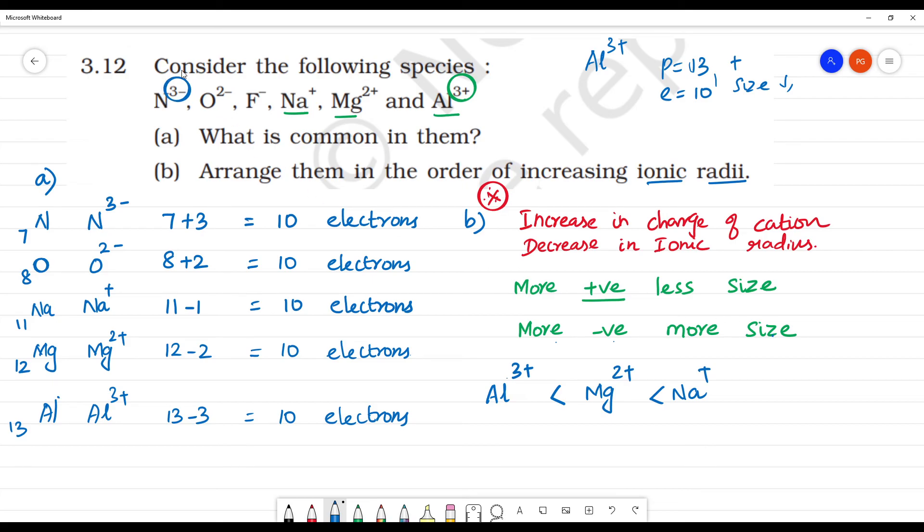The biggest size is N³⁻, next is O²⁻, then F⁻. So the complete increasing order is: Al³⁺ < Mg²⁺ < Na⁺ < F⁻ < O²⁻ < N³⁻. This is the answer to the second question.